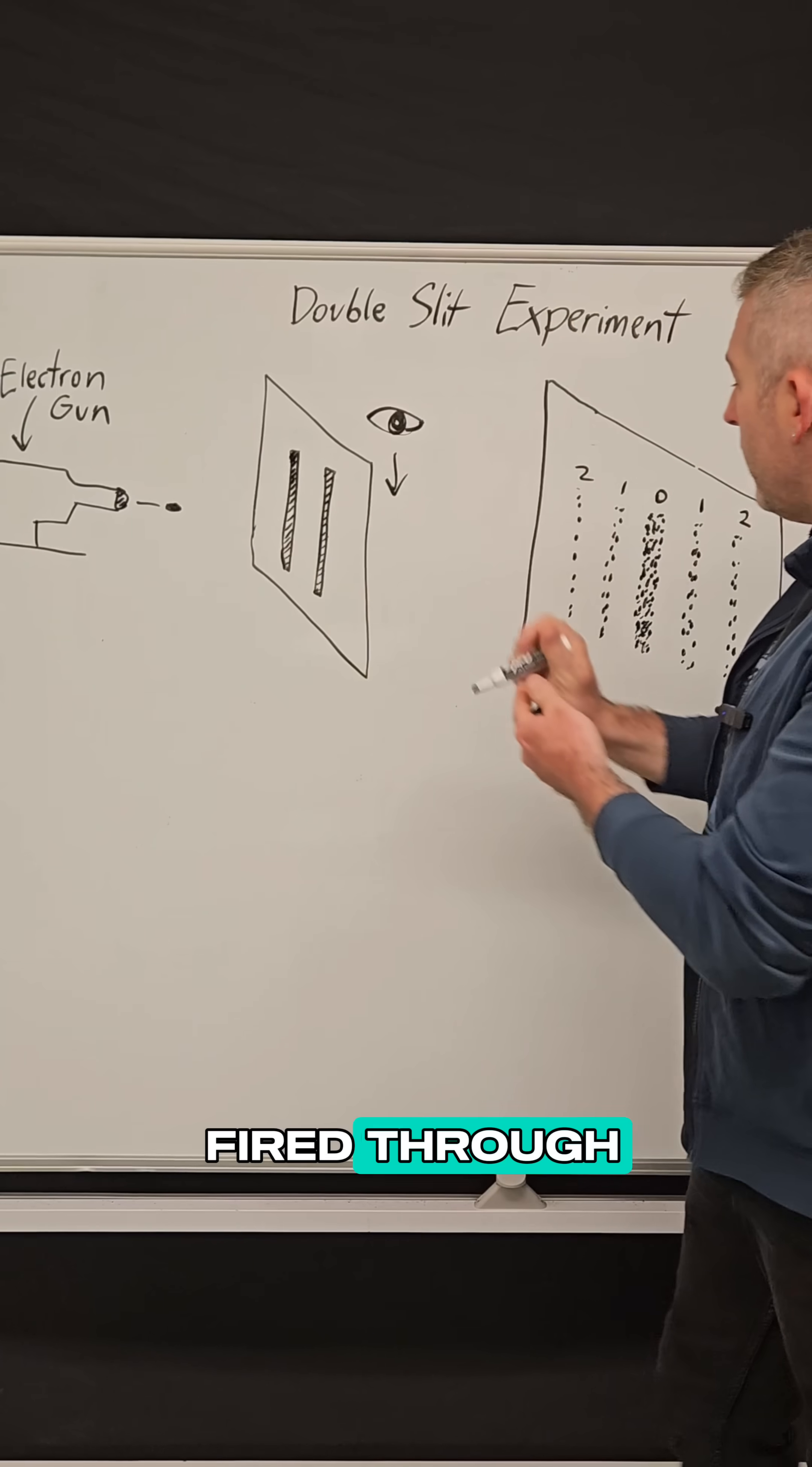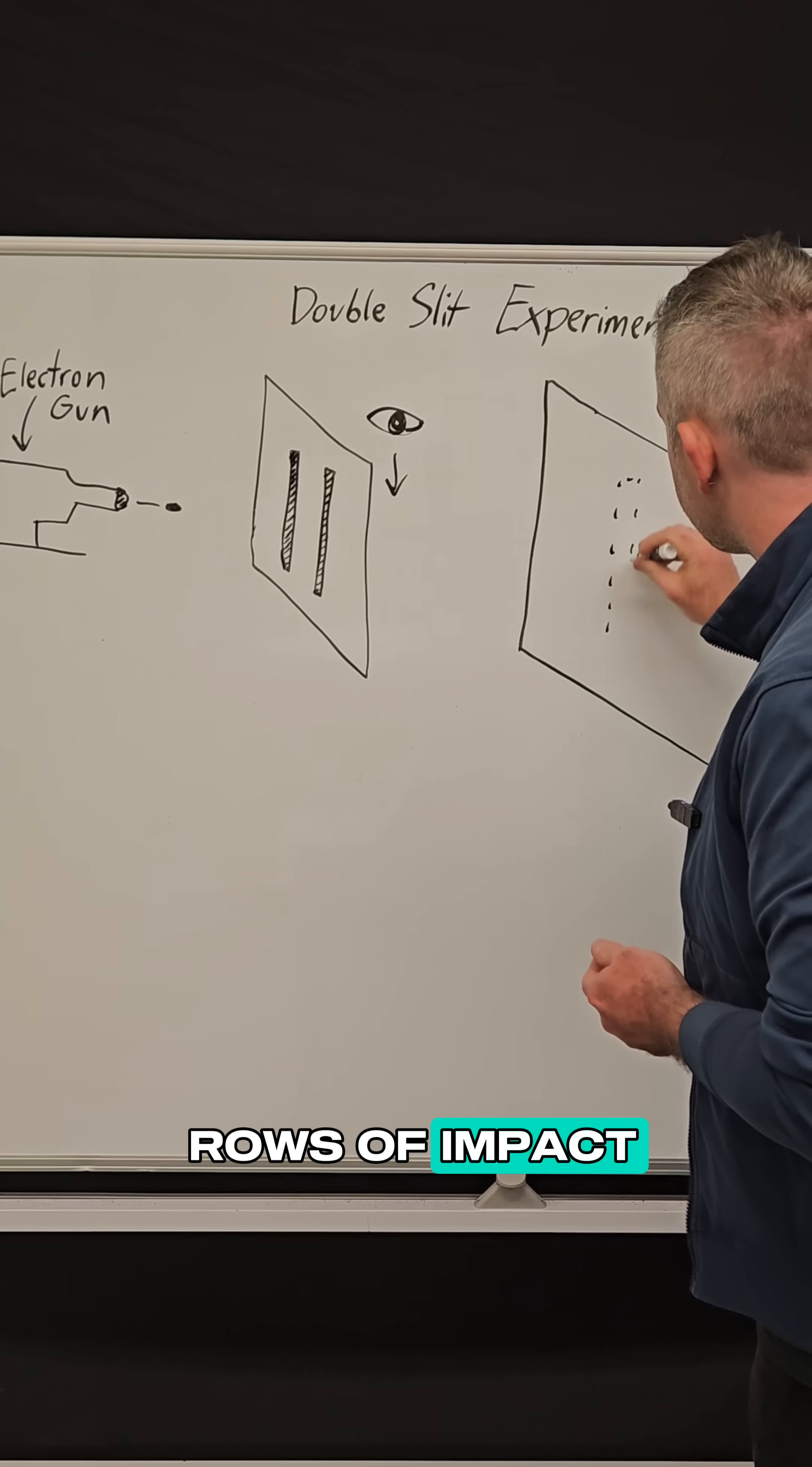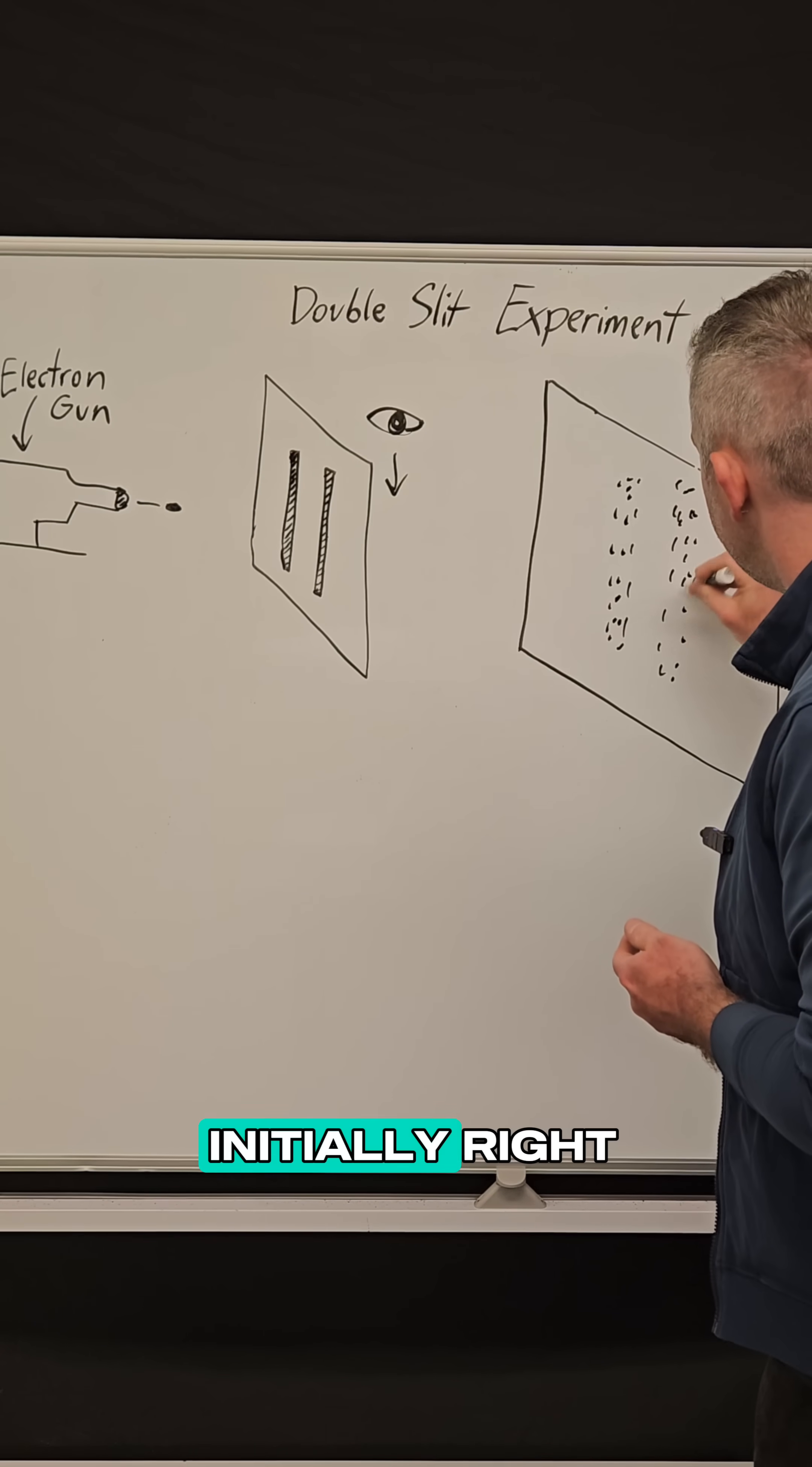as these electrons are fired through, they didn't hit the back wall like this anymore. Instead, what we got were two nice neat rows of impact. So we had electrons hitting here and electrons hitting here, just as we expected initially, right?